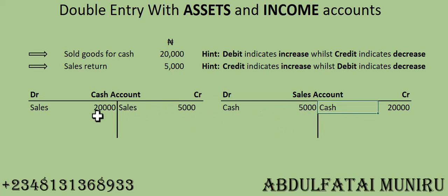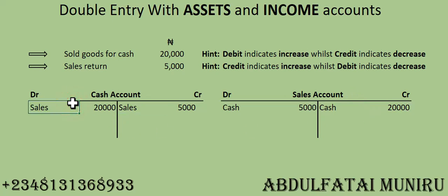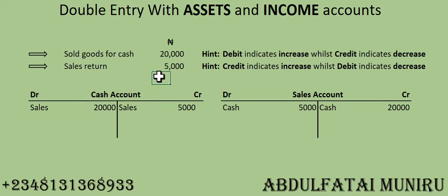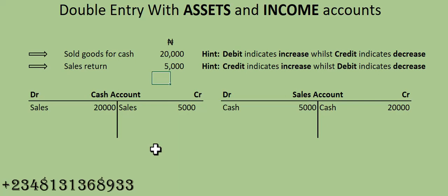Before the return was recorded, we had sales of 20,000 Naira and cash of 20,000 Naira. The balance was on the debit side for cash and the credit side for sales, which are the favorable sides for each account type. After the return posting, the debit side of the cash account is still greater than the credit side, which is favorable since it's an asset account. We've illustrated how the double entry system works for asset and income accounts. Please subscribe, like, share, and drop any questions in the comments.